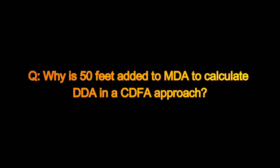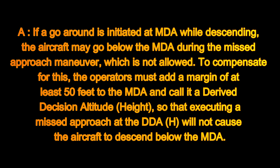While flying a CDFA approach, 50 feet is added to the MDA to obtain the DDA. Why is 50 feet added? If a go-around is initiated at MDA while descending, the aircraft may go below the MDA during the missed approach maneuver, which is not allowed. To compensate for this, operators must add a margin of at least 50 feet to the MDA and call it a Derived Decision Altitude — DDA — so that executing a missed approach at the DDA will not cause the aircraft to descend below the MDA.